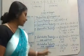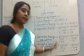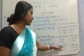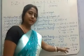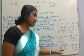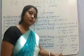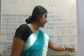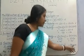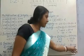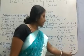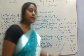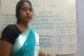Distributive property over subtraction works the same way. For 5 into (3 minus 6), we get 5 into minus 3, which gives minus 15. If we distribute: 5 into 3 minus 5 into 6 gives 15 minus 30, which is also minus 15. In both cases the same answer is coming.